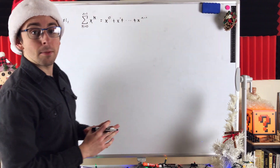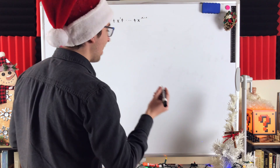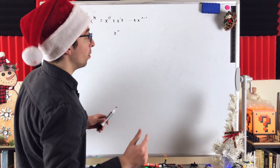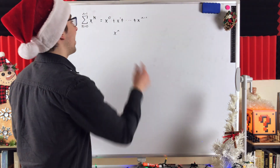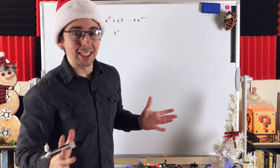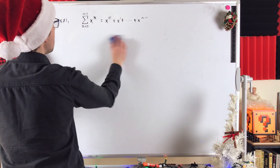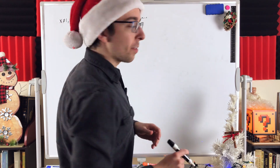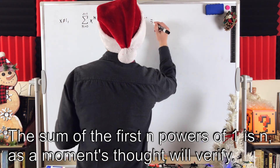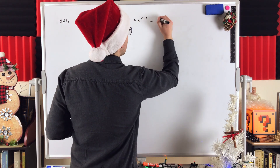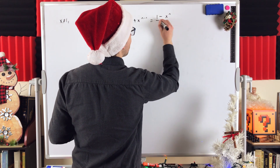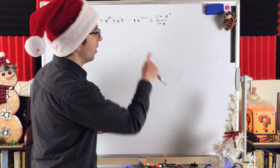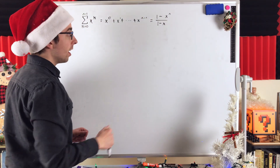Notice a little quirk of starting at x to the power of 0 — the first n powers of x goes up to x to the power of n minus 1 because we start at x to the power of 0. So what beautiful expression is this sum equal to? It's 1 minus x to the power of n divided by 1 minus x — that's 1 minus the next power of x not in our sum, x to the power of n, divided by 1 minus x.